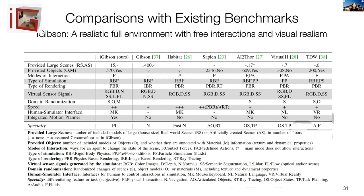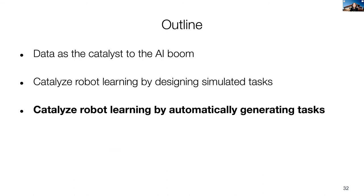But there is a caveat I've brushed under the rug, which is that we still have to design tasks by hand. The environment itself doesn't automatically give you robotic interaction tasks, and that is still a very expensive process. What about a different way of thinking? That's the third part of this talk — instead of designing and generating a task environment, we can automatically generate tasks, getting into the spirit of meta-learning to catalyze robotic learning.